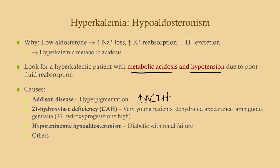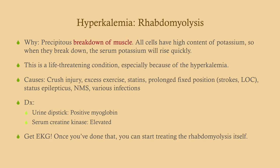Hyperpigmentation is very common in Addison's because ACTH is increased to stimulate the adrenals, and ACTH's precursor is also a precursor for melanocyte-stimulating hormone. 21-hydroxylase deficiency is a common cause of congenital adrenal hyperplasia — look for a very young patient with hypotension, salt craving, and ambiguous genitalia, as cholesterol-derived hormones get shunted into sex hormones. Hyporenimic hypoaldosteronism — look for a diabetic patient who also has renal failure.